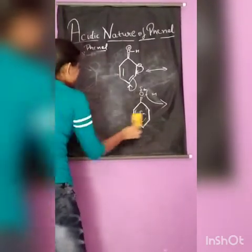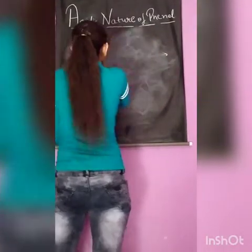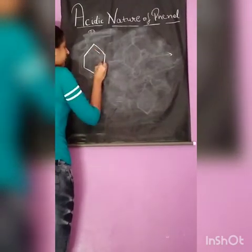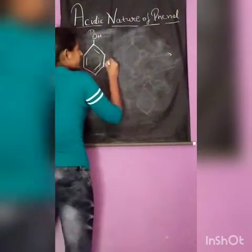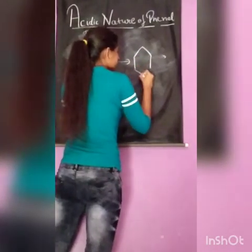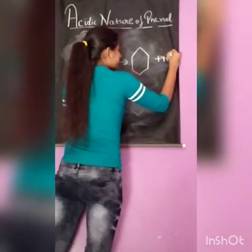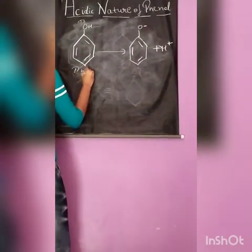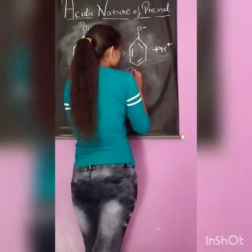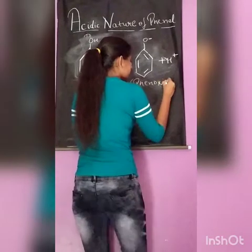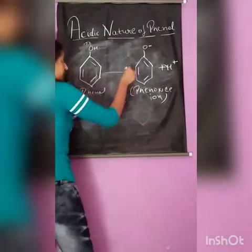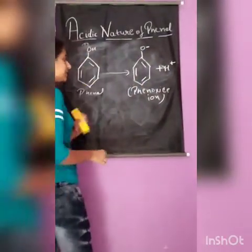Before discussing the further acidic nature, we will see the resonance of the phenoxide ion formed after the removal of the H-positive ion. From phenol, the H-positive ion gets removed. It will form the phenoxide ion. Now let's see its resonance.